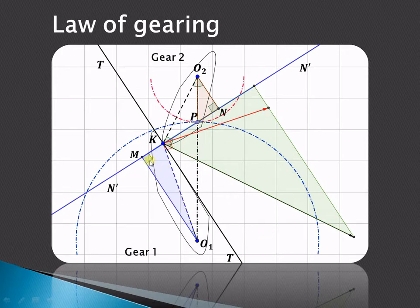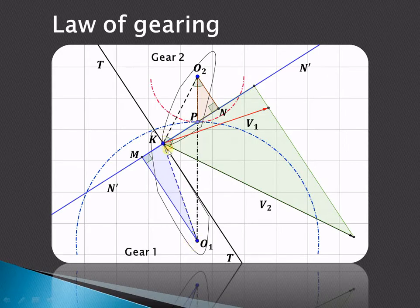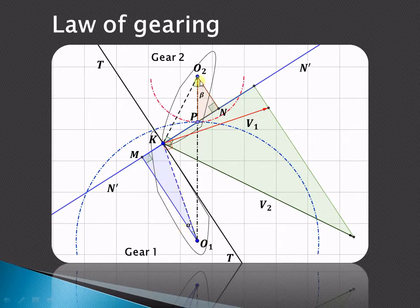Now draw a perpendicular so that O1M is perpendicular to the common normal N'N'. Similarly, O2N is also perpendicular to the common normal N'N'. Now draw velocity vectors V1 and V2: V1 is perpendicular to O1K and V2 is perpendicular to O2K. Let the angle M'O1K be alpha and the angle N'O2K be beta.